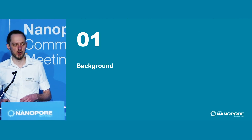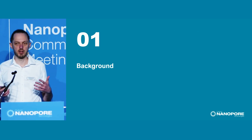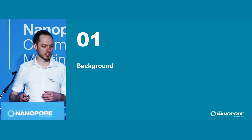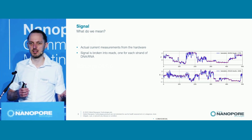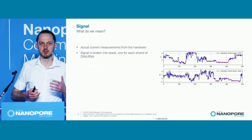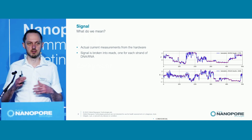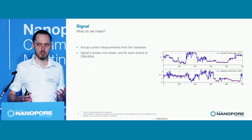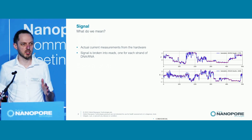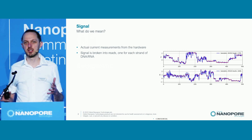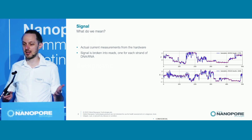Let's lay some groundwork. Some of you may know this already, but I think it's good to make sure we're all on the same page. Firstly, what do we mean by signal? This is the measurement of the actual electrical current across a nanopore as a time-ordered series of samples. This signal is broken down into reads — we'll think of it as the signal for a single strand of DNA or RNA.